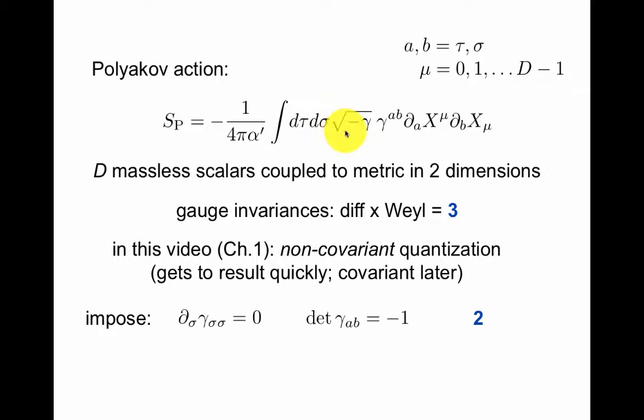From the point of view of the world sheet, the two-dimensional theory on the world sheet that the string sweeps out in time, this is d massless scalars coupled to the metric in two dimensions. The gauge invariance is the local invariances of this action: diffeomorphisms, the coordinate transformations along the string world sheet, and the Weyl scaling of the world sheet metric γ.